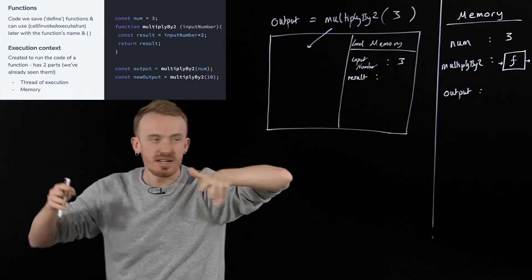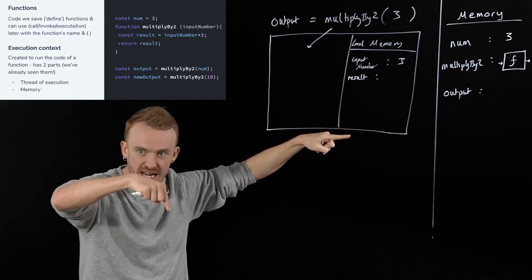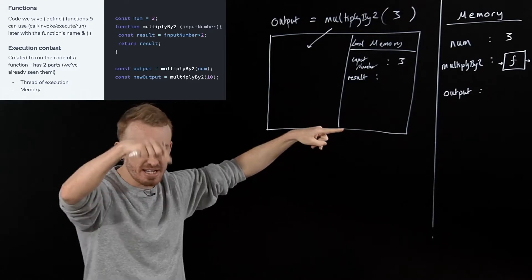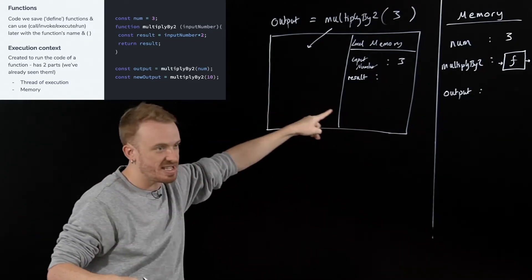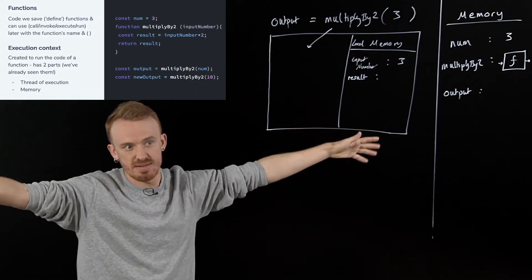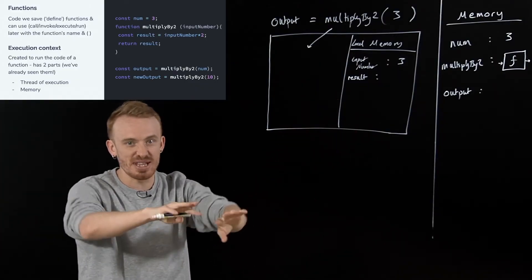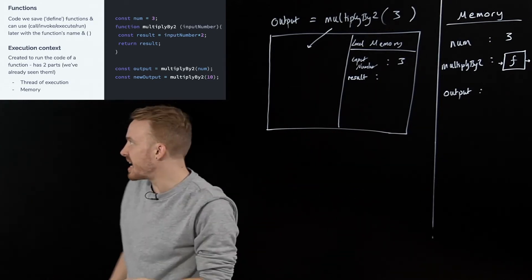So the placeholder input number that's going to receive when the function ends up being run an actual input, an actual value, an actual number, that number that gets passed in, is known as our argument. The placeholder that awaits it is known as our parameter. They are fundamentally different. Two sides of the same coin, but they are fundamentally different things. One is the label, one is the thing stored in that label. Okay.